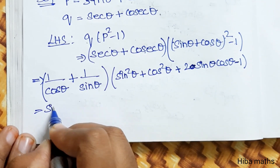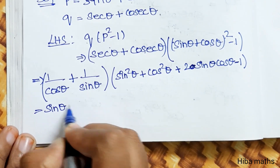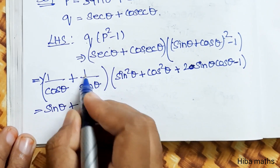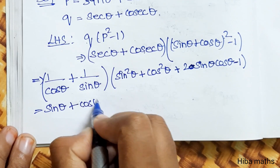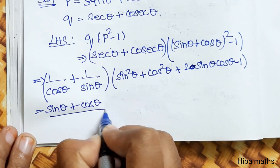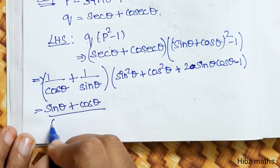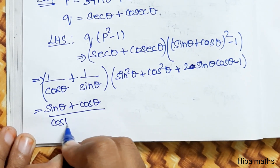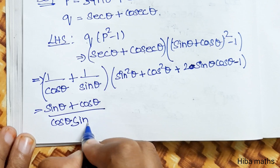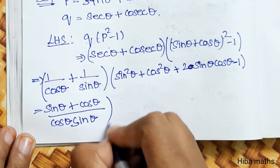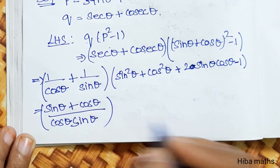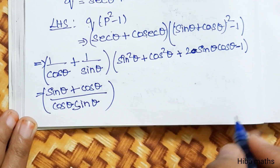Combining sin and cos terms: (sin θ + cos θ) divided by cos θ · sin θ. We can now solve this first term.